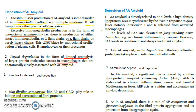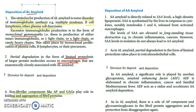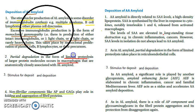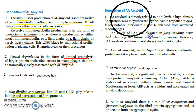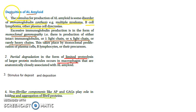In this video, we want to cover the deposition of AL amyloid and the deposition of AA amyloid. AL means amyloid light chain protein, and AA is amyloid associated protein, as you have already seen. Both of these are fibrillar components. Let us look at AL first, deep diving into AL.